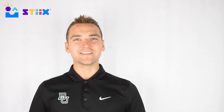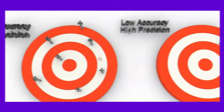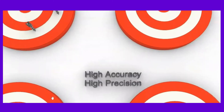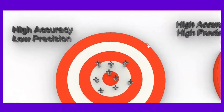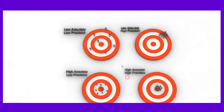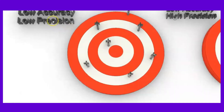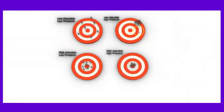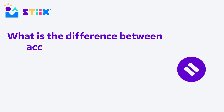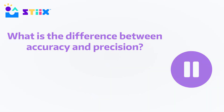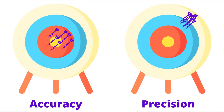The last topic we want to talk about is accuracy and precision. We hear those words a lot, but did you know they're actually different? After seeing that animation, accuracy has to deal with how close the data is to the target, while precision has to deal with how close the data is to each other.